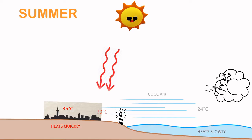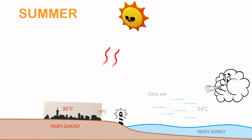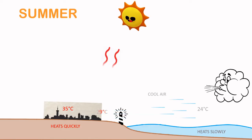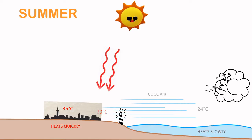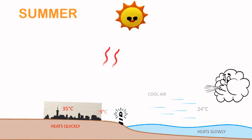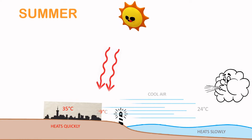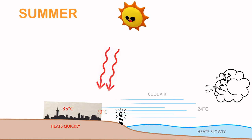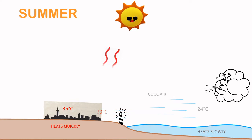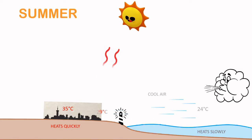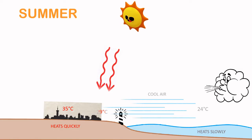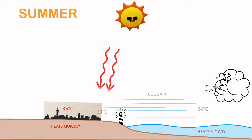One of the main reasons coastlines around the world, especially those that are nearer to the tropics, are not permanently scorching hot during the day, is because the ocean currents that flow past them moderate their temperatures and cool them.